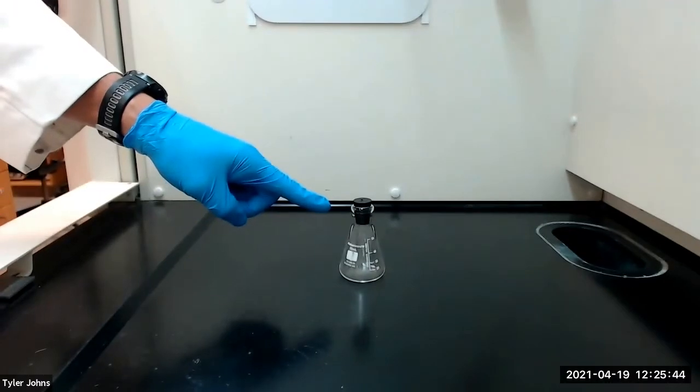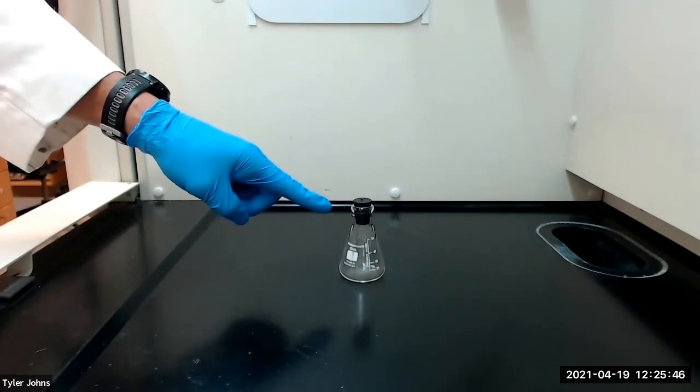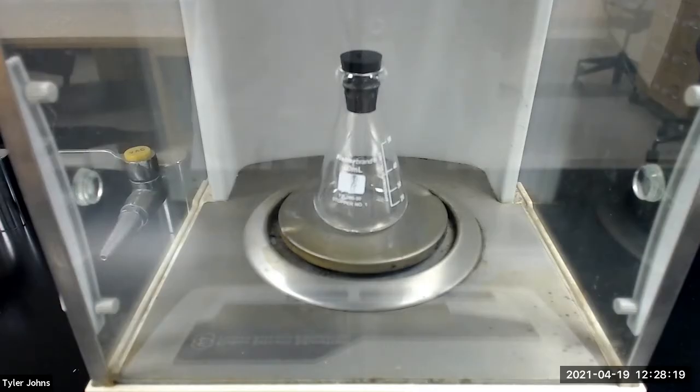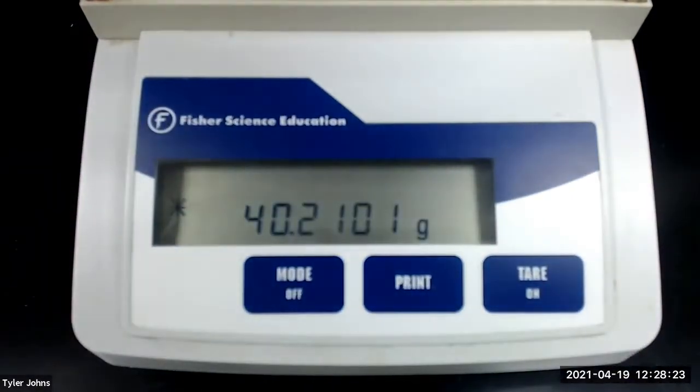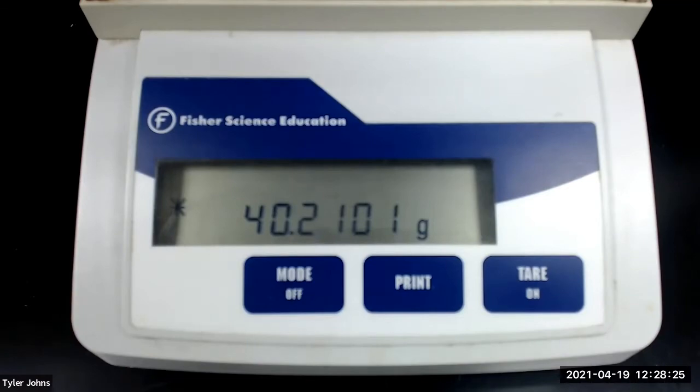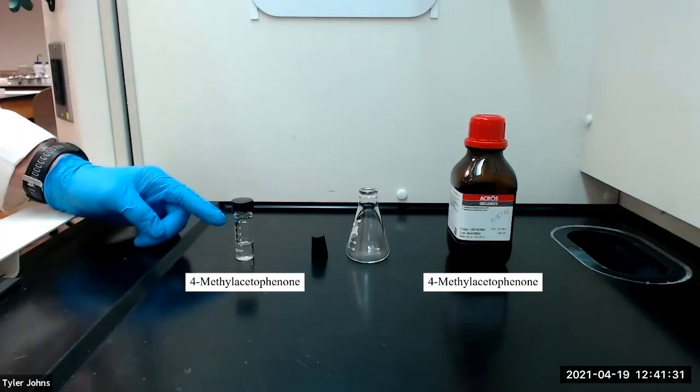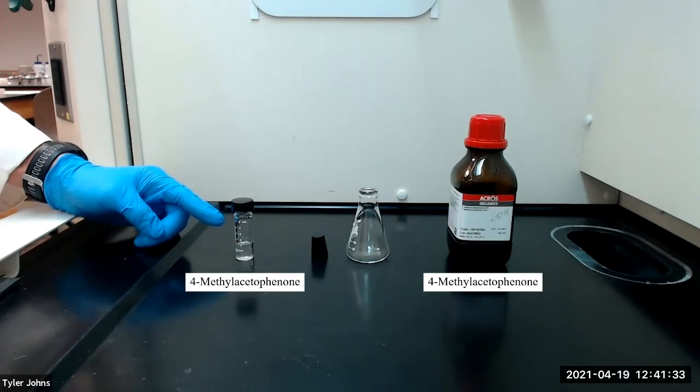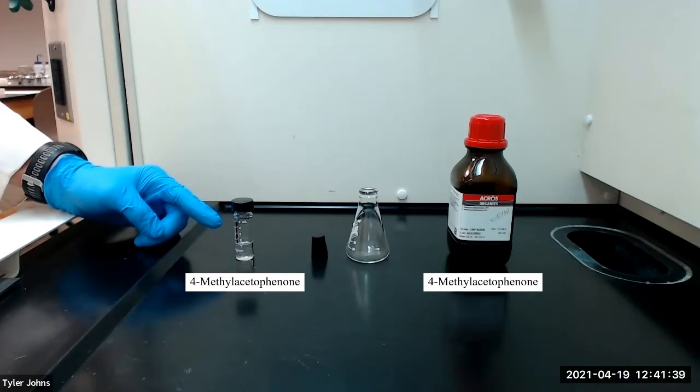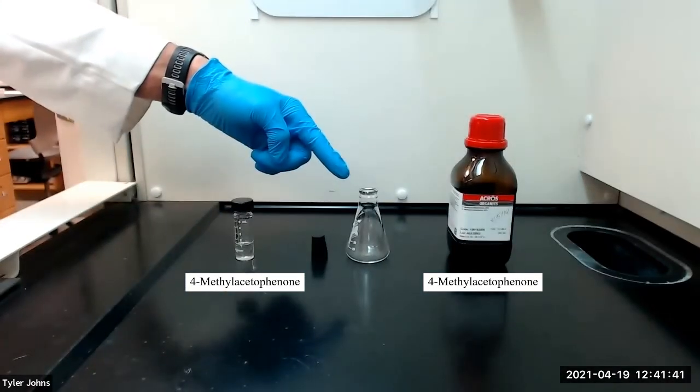Let's get started. To begin, we will pre-weigh a stoppered 50-milliliter Erlenmeyer flask. The mass of the pre-weighed stoppered flask is 40.2101 grams. We next need to add approximately 0.005 moles of the 4-methyl acetophenone product from the Friedel-Crafts acylation experiment to the pre-weighed Erlenmeyer flask.